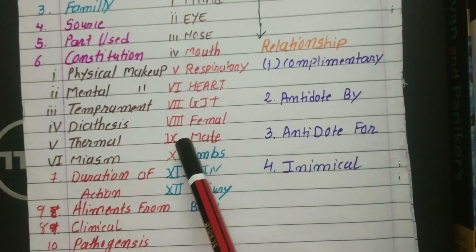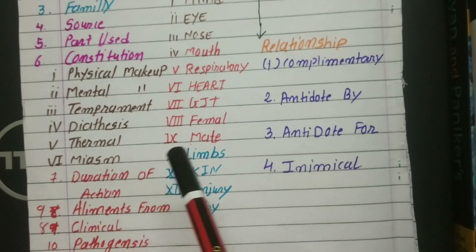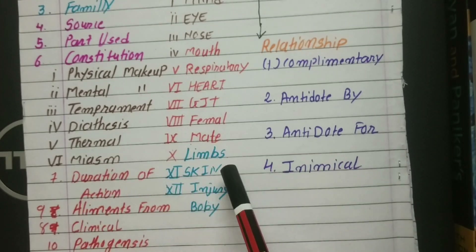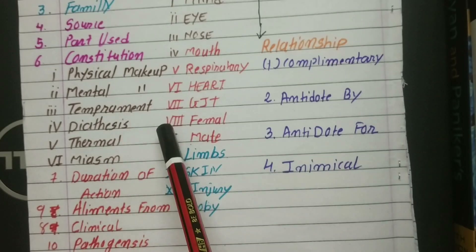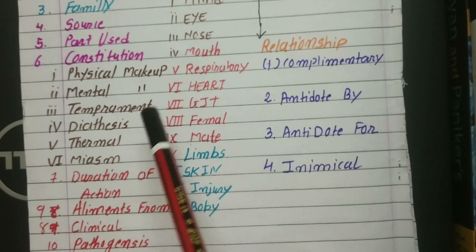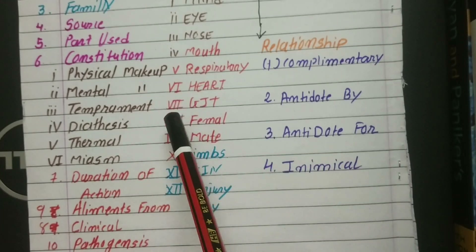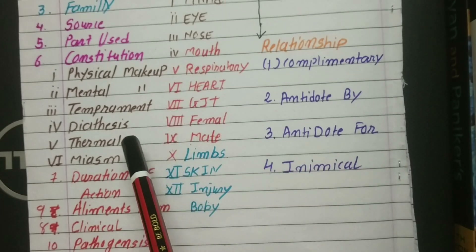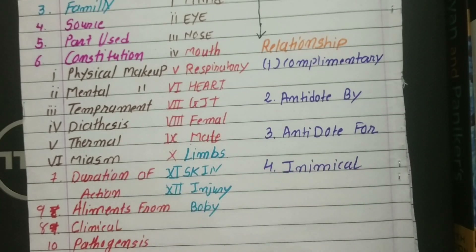Then the diathesis — what is the major disease tendency of this drug? For example, rheumatic diathesis or gout diathesis. These types of diathesis you will study in the organon. Then the thermal — meaning whether the patient is hot or chilly.